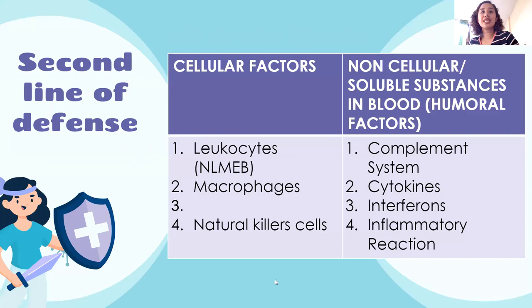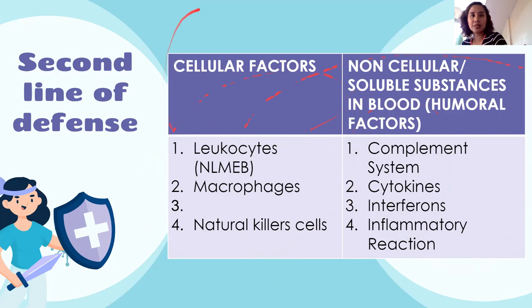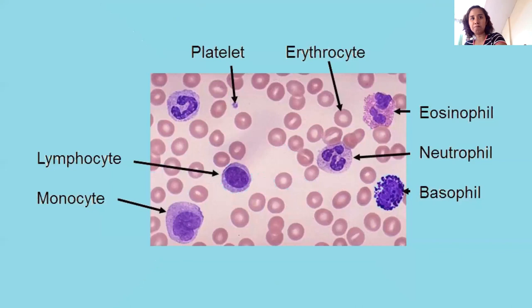Now, the second line of defense. We are still in natural or innate immunity, so these are nonspecific. Starting with cellular factors, then non-cellular factors. For complement, cytokines, and interferons — these are products produced by the cells. For the complement system, these are proteins called serine proteases. Number four is the inflammatory response — it involves both cells and non-cellular substances.